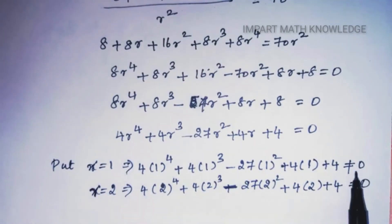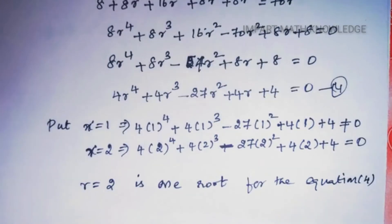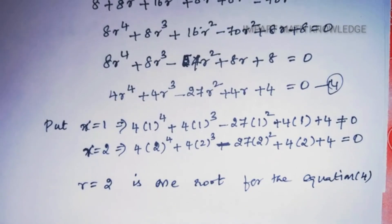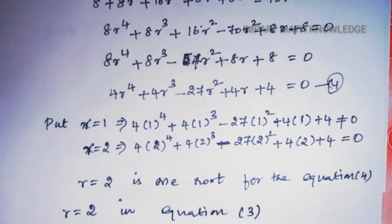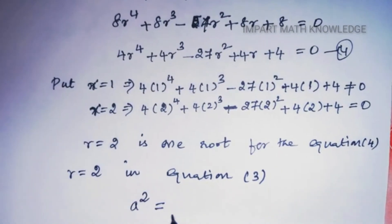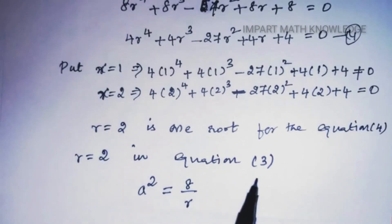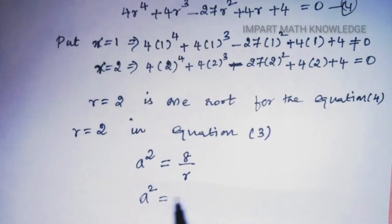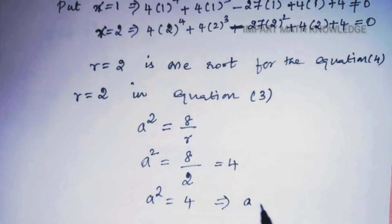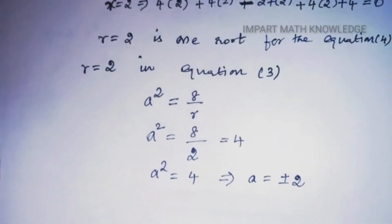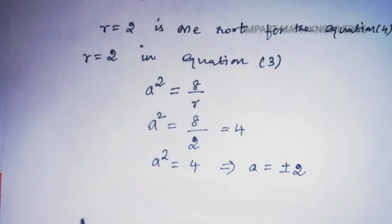Testing r = 1 does not satisfy the equation. Testing r = 2 satisfies the equation, so r = 2 is a root. Substituting r = 2 into equation 3 (a² = 8/r): a² = 8/2 = 4, so a = ±2. We take the positive value, giving a = 2 and r = 2.